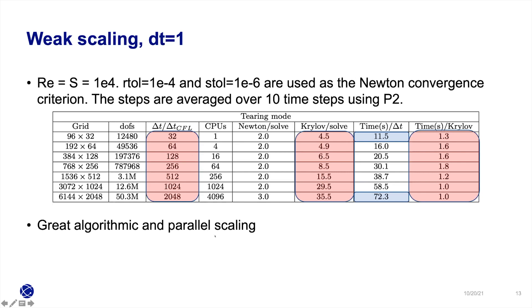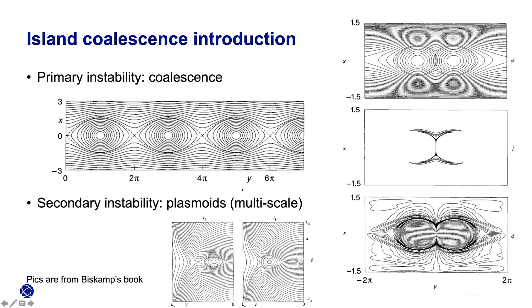The final example I want to demonstrate is called island coalescence simulation. Basically, you start from two islands of current or magnetic field with current around the same direction. They will get attracted to each other and then form this current sheet in the middle. This is what happens in the later time.